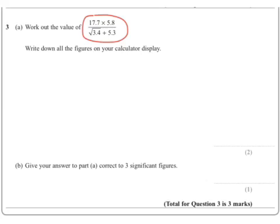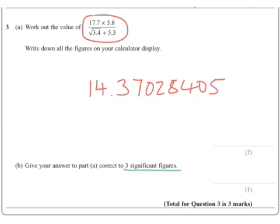Take care when doing it, and you should have come out with 14, I'm not going to write it on that line, 14.37028405. It then says round to three significant figures.